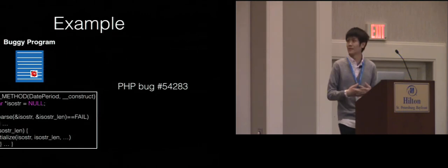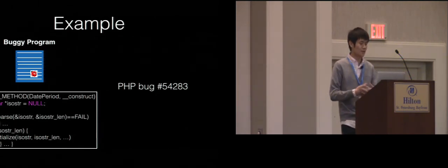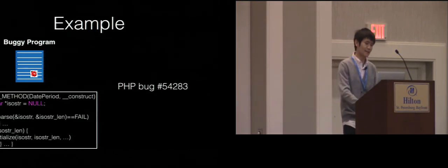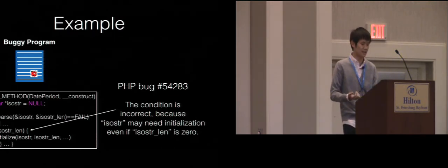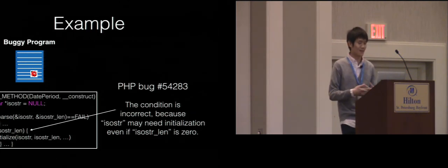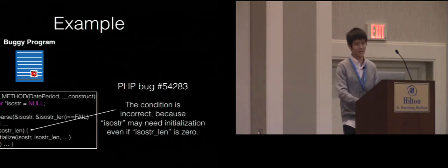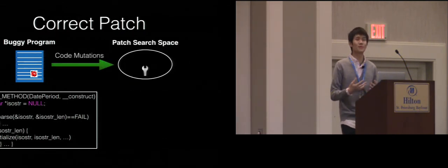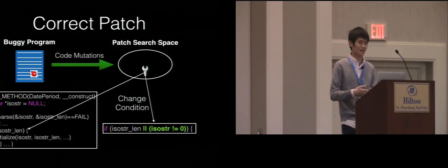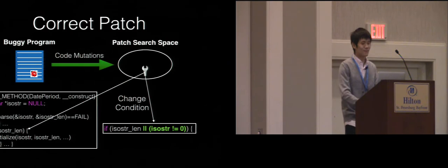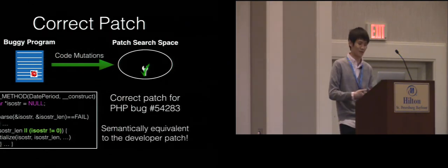Here is a code snippet of a real PHP bug. It contains a buggy condition that is incorrect because the struct ISO_STR may need initialization even if ISO_STR length is zero. The condition only checks ISO_STR length, so there will be cases where ISO_STR does not get the necessary initialization. If we take this code to a patch generation system, it generates a search space with mutations. There will be useful patches in the search space — for example, one that changes the condition by disjoining an additional clause checking the ISO_STR variable. This patch is in fact a correct patch for this case and is semantically equivalent to the later developer patch.